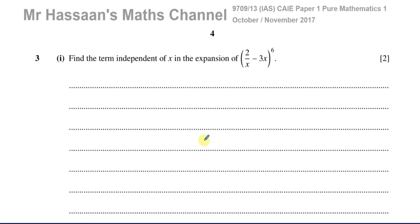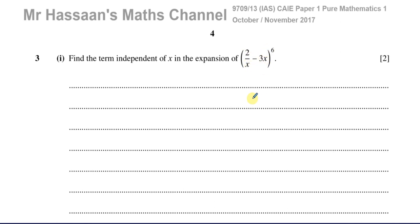This question would also be related to the Pure 2 P2 paper from Edexcel — same kind of material. This is about binomial expansion. Part 1 says: find the term independent of x in the expansion of (2/x − 3x) to the power of 6.